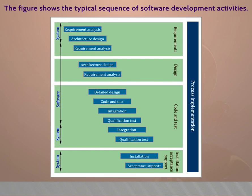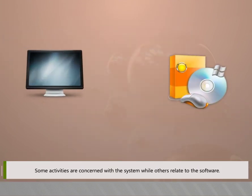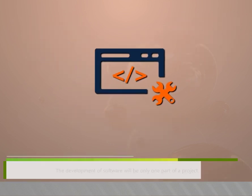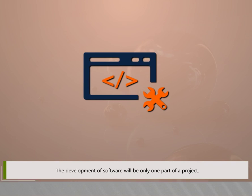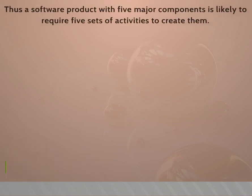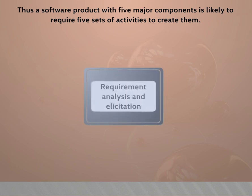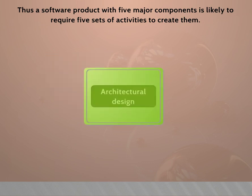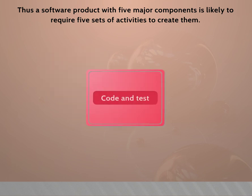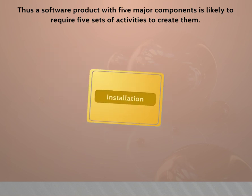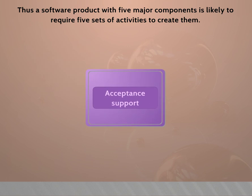The typical sequence of software development activities includes some activities concerned with the system while others relate to the software. The development of software is only one part of a project. A software product with five major components is likely to require five sets of activities: requirement analysis and elicitation, architectural design, detailed design, code and test, integration, qualification testing, installation, and acceptance support.